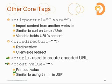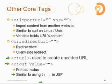And c:out is a way for me to print out the value of a bean, a property, a header, a cookie, or anything available within the expression language. You'll notice that c:out has a shorthand notation — simply using the expression syntax dollar sign followed by curly braces within the context of my HTML — and the JSP container will automatically convert that expression into a c:out and print out the value.